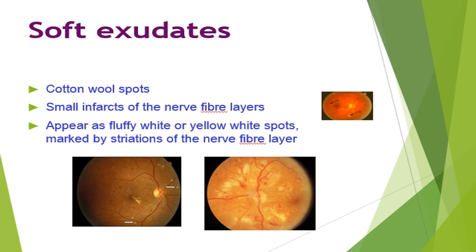In diabetic retinopathy, another clinical feature is soft exudates, which are nothing but cotton wool spots. These represent the infarction of the nerve fiber layer of the retina. The site of cotton wool spots and the flame-shaped hemorrhages is just the same layer — the nerve fiber layer of the retina. They appear as fluffy white patches with irregular borders and striations of the nerve fiber layer.